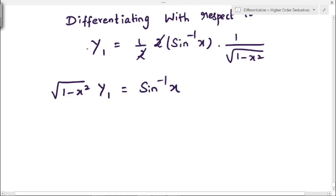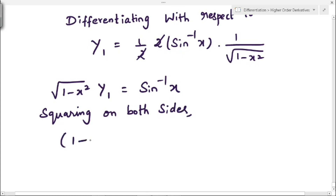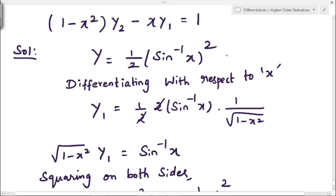The 2's cancel, leaving √(1 - x²)·y₁ = sin⁻¹x. Now squaring both sides: (1 - x²)·y₁² = (sin⁻¹x)². From the original y = 1/2·(sin⁻¹x)², we get 2y = (sin⁻¹x)², so we substitute (sin⁻¹x)² = 2y.